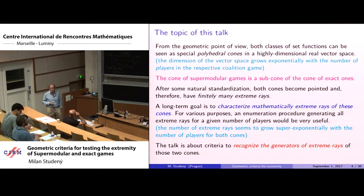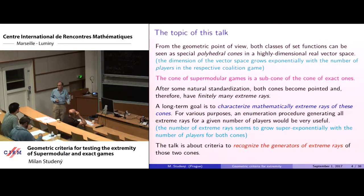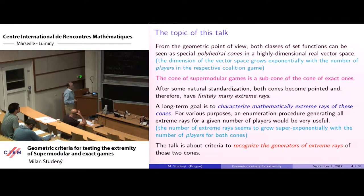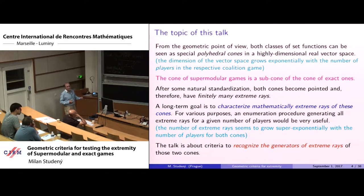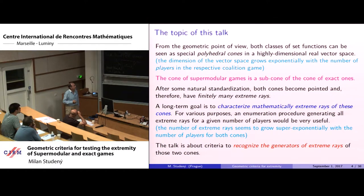From the geometric point of view, both classes of set functions are special polyhedral cones in a highly dimensional space, where the dimension is exponential in the number of players. The class of supermodular games is a subcone of the class of exact games. These cones are not pointed and do not have extreme rays, but after restricting to a certain subspace they become pointed, and we can characterize the cones by their extreme rays. For various purposes it would be good to characterize mathematically the extreme rays of these cones.